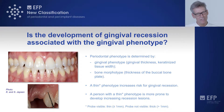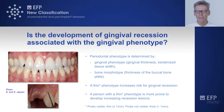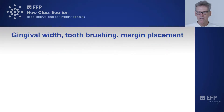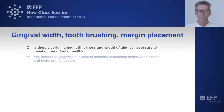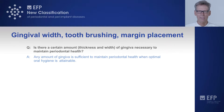If a periodontal probe is not visible when introduced into the sulcus, we are dealing with a thick phenotype of more than one millimeter. There are more sophisticated ways to measure this, but this is an easy way to assess it clinically. It is also known that a person with a thin phenotype is more prone to develop increasing recession lesions over time. Based on all the evidence, we came to the conclusion that any amount of gingiva is sufficient to maintain periodontal health when optimal oral hygiene is attainable.